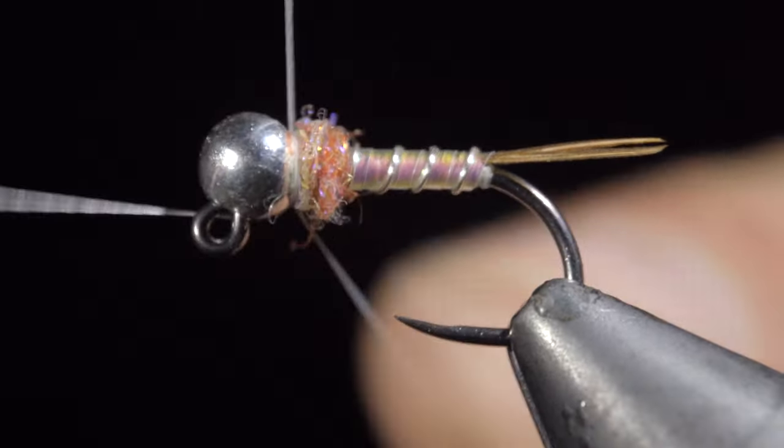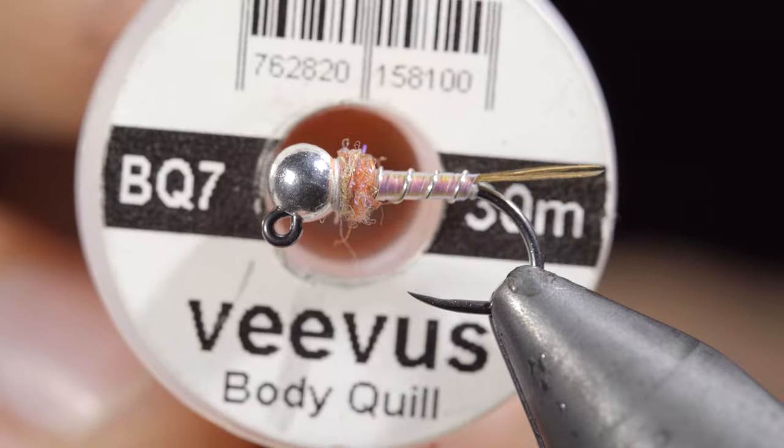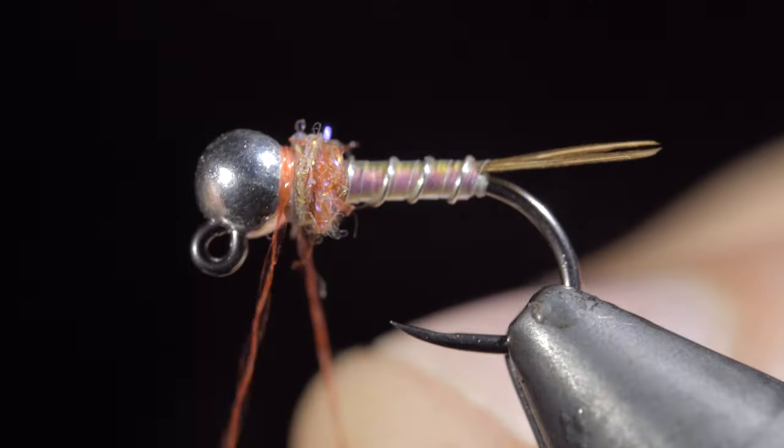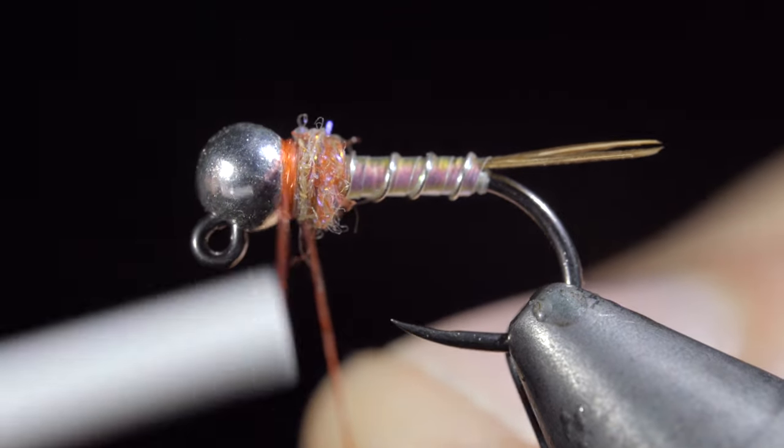Whip finish. Because I didn't use a red thread, I grabbed some bevis. This is a body quill in a nice red shiny color. We'll attach that around the head of our fly, creating a nice little hot spot.